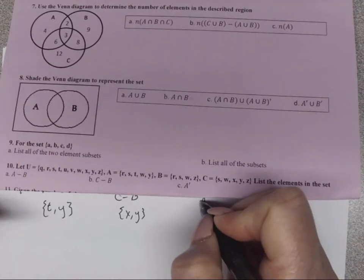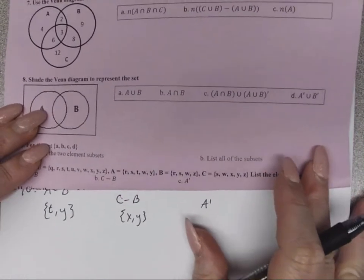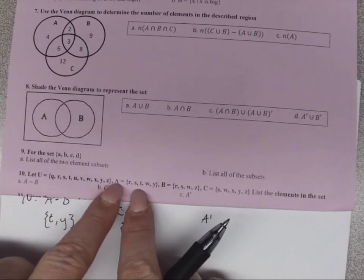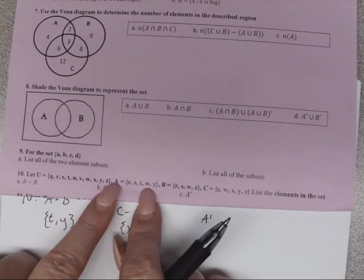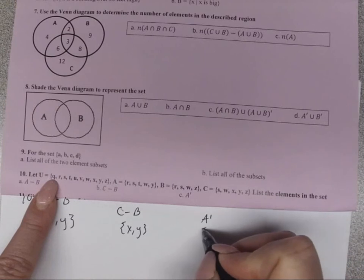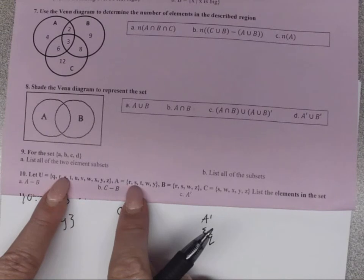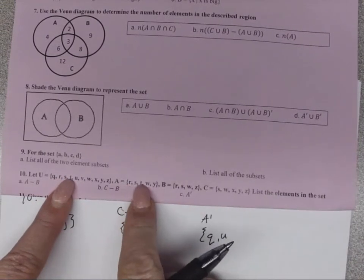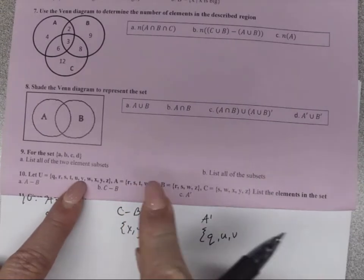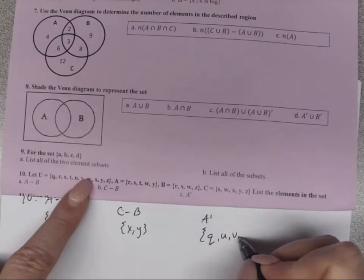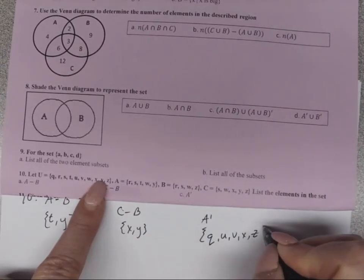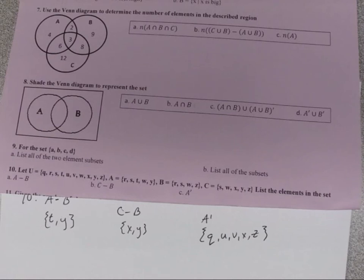For A complement, we look at the universal set and remove everything in A. Going through: Q is not in A so it's included; R, S, T are in A so excluded; U, V are not in A so included; W is in A so excluded; X is not in A so included; Y is in A so excluded; Z is not in A so included. That gives us A complement.